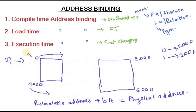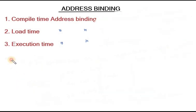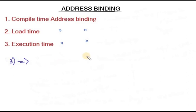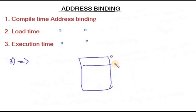Next is execution time address binding. In execution time address binding, the program has already been loaded into main memory and may be executing. But if we want to move that program from one memory block to another block, that is allowed. The program range is 0 to 4000.